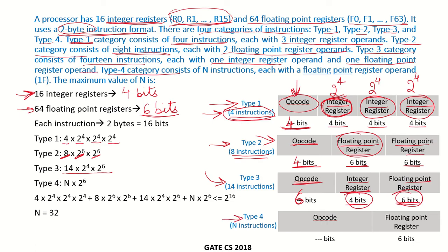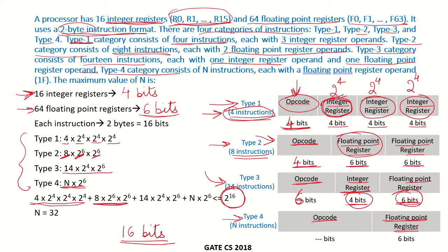Type 4 consists of n instructions, each with one floating point register operand. The combinations possible are n × 2⁶. Since each instruction is 16 bits, the maximum number of possible combinations is 2¹⁶. The sum of all combinations across all four types cannot exceed 2¹⁶: (4 × 2⁴ × 2⁴ × 2⁴) + (8 × 2⁶ × 2⁶) + (14 × 2⁴ × 2⁶) + (n × 2⁶) ≤ 2¹⁶. Solving this gives n = 32, so the maximum number of Type 4 instructions is 32.